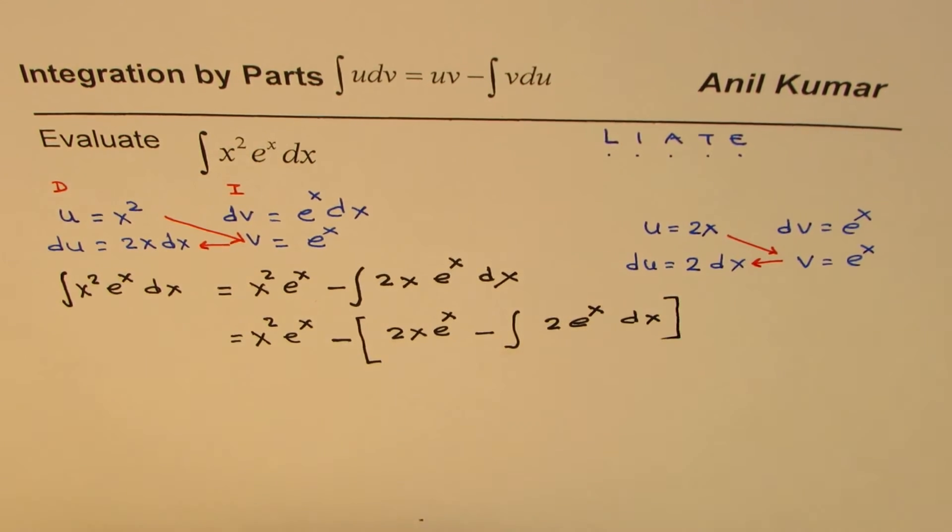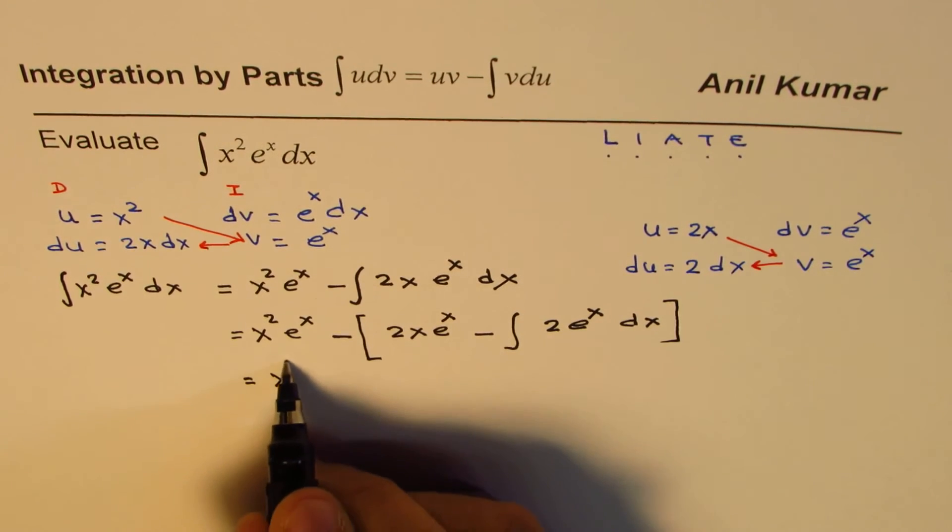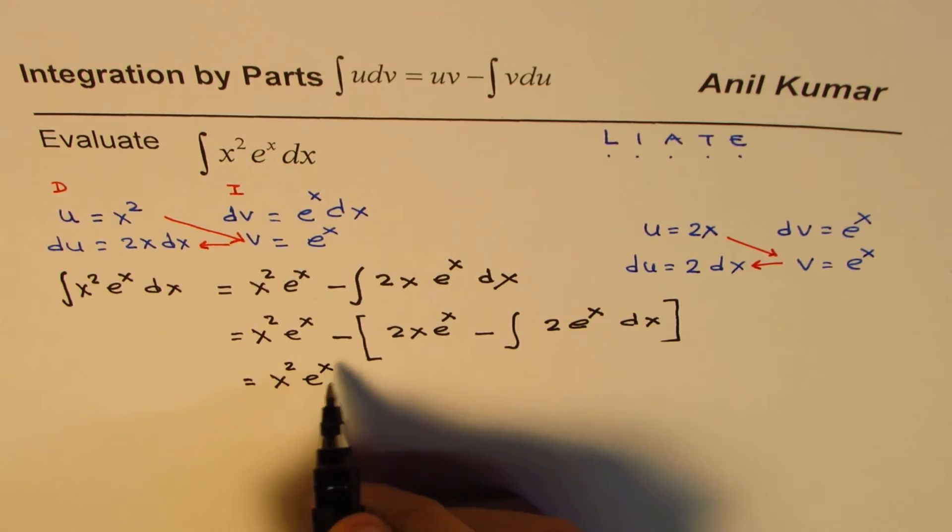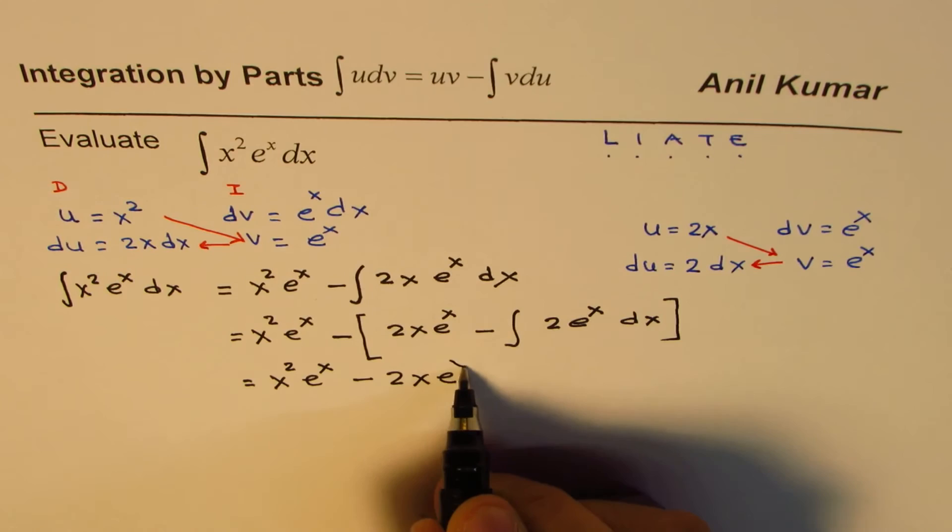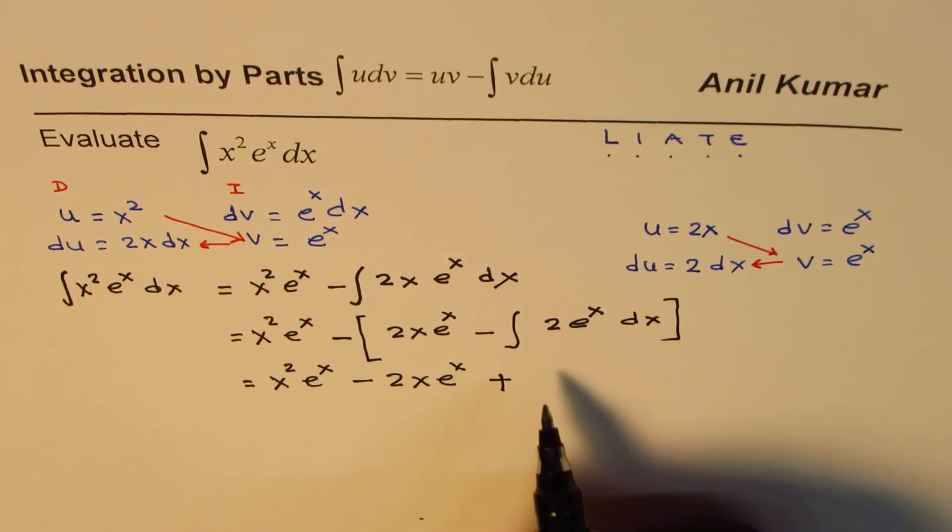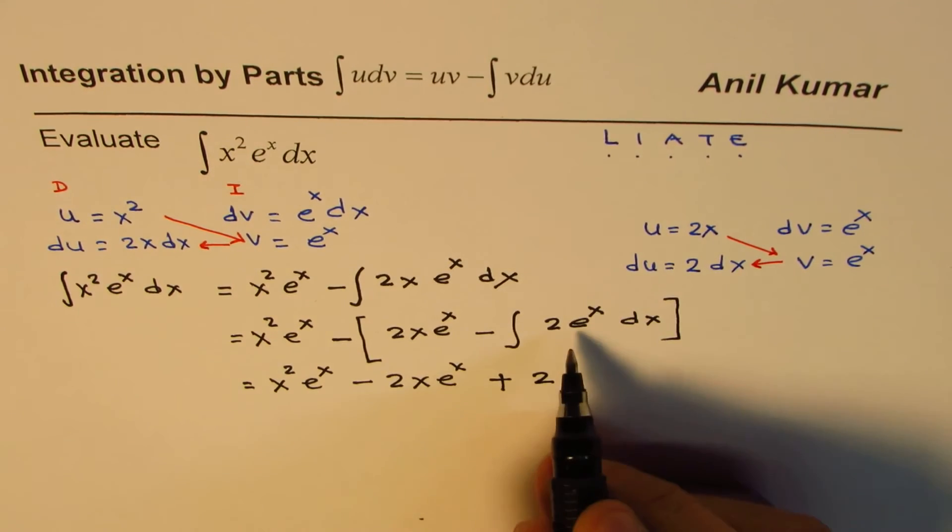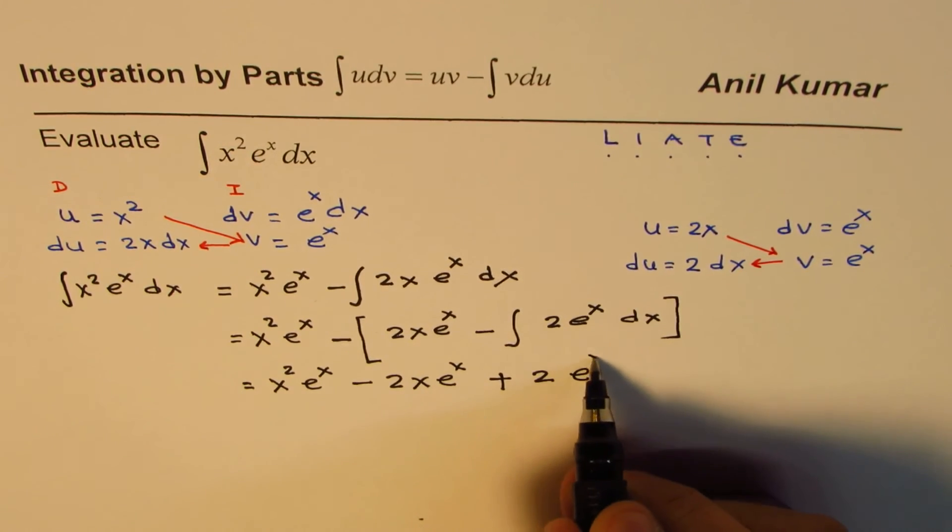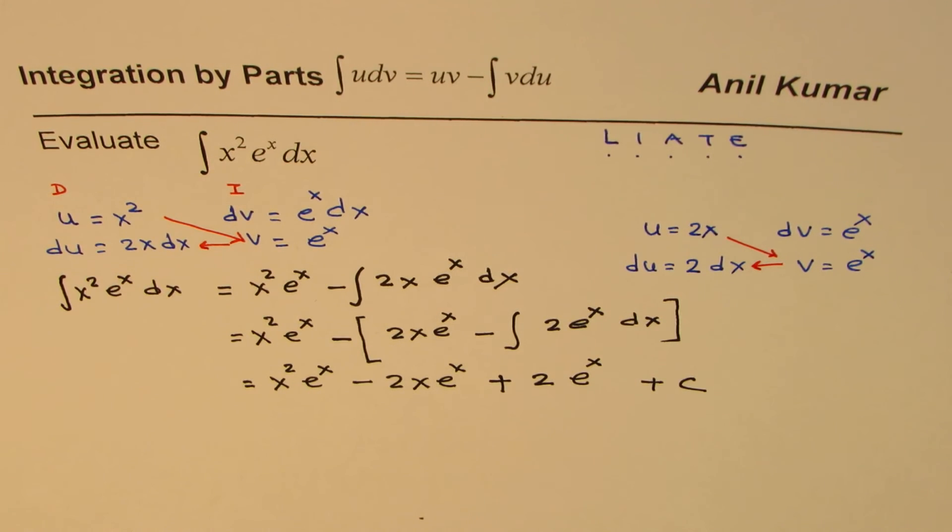Now we can actually open the bracket. We have x square e to the power of x minus 2x e to the power of x, and minus and minus becomes plus. What is integral of this? 2 is a constant we can take it outside. Integral of e to the power of x is e to the power of x plus c. So that is how we could do it. That is our answer.